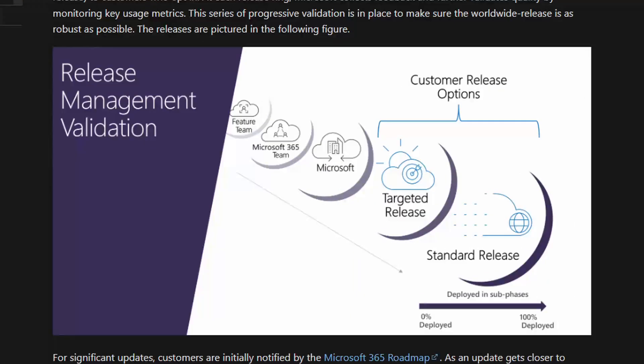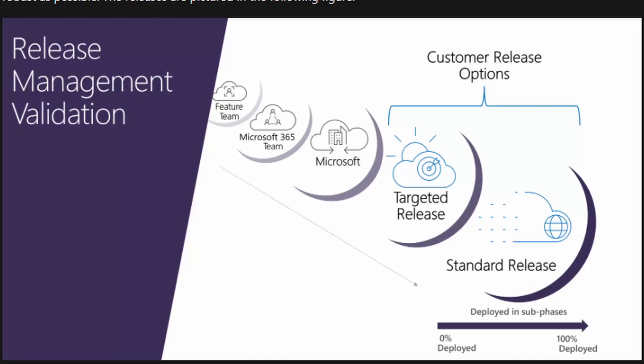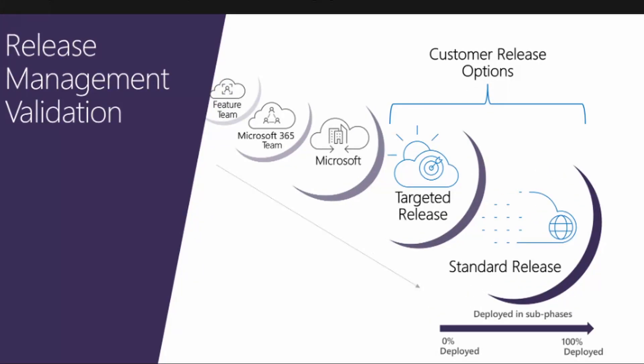Here's how Microsoft rolls out updates. There are two options that every tenant is selecting between. One is the standard release — this is the default one. So if you've got a brand new tenant and you've never changed this, you'll be on standard release. What that means is that when Microsoft rolls out features for everyone, all their testing is done and everything is ready to be rolled out for all customers, then they all go to those standard release tenants. But there's a way to get those features first before the standard release tenants.